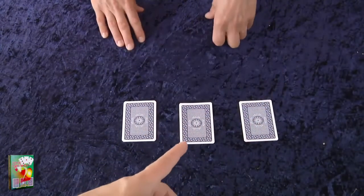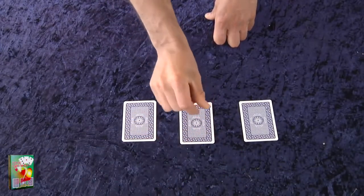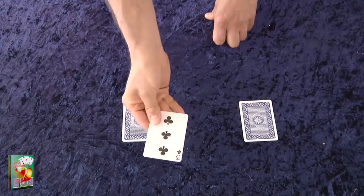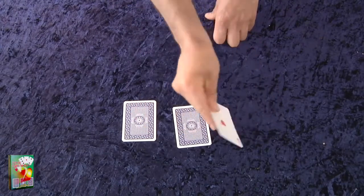OK, now, where is the red ace? Over here? Sorry, you lose. It's a black card. And the red ace is over here.